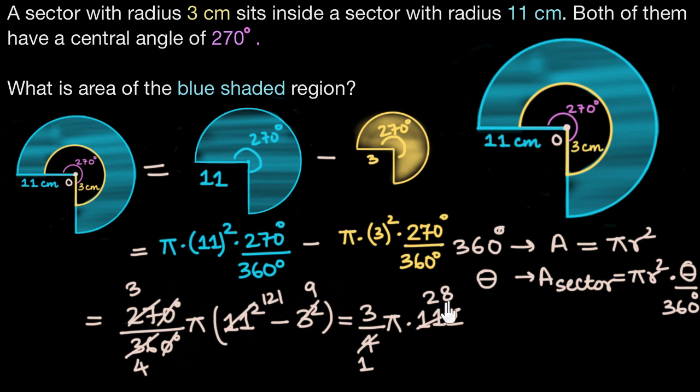So we'll have here 84π and since the units are given to us in centimeters so the area would be 84π centimeters squared. So let me just mark it out for you, this is the area of our blue shaded region.